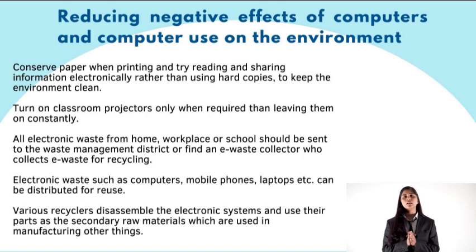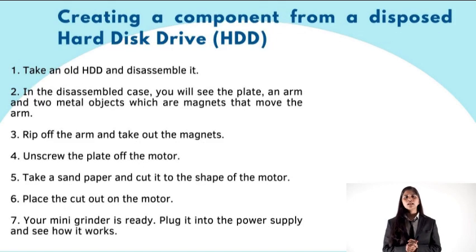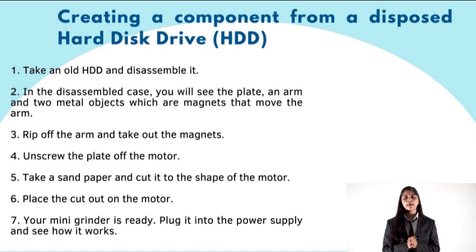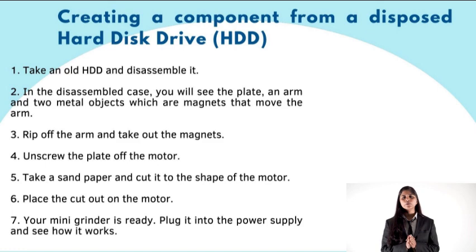Creating a component from a disposed hard disk drive (HDD): take an old HDD and disassemble it. In the disassembled case you will see a plate, an arm, and two metal magnets that move the arm. Rip off the arm and take out the magnets. Unscrew the plate from the motor. Take sandpaper and cut it to the shape of the motor, then place the cutout on the motor. Your mini grinder is ready — plug it into the power supply and see how it works.